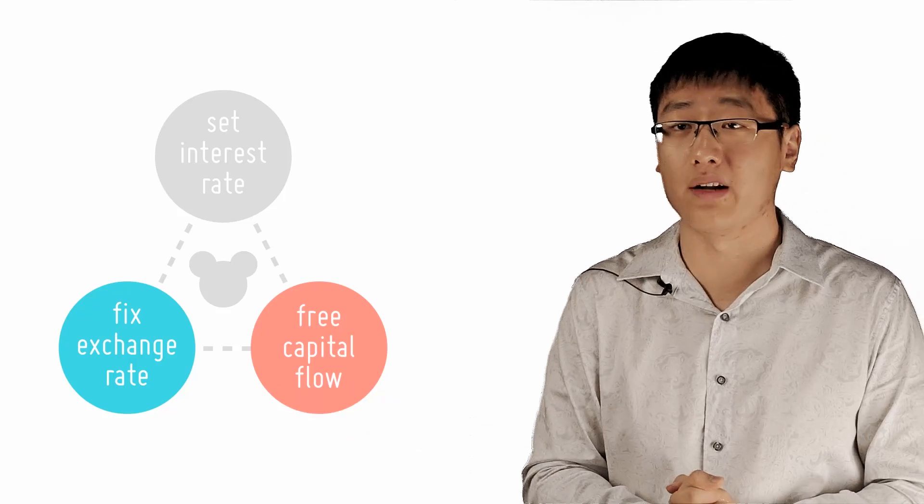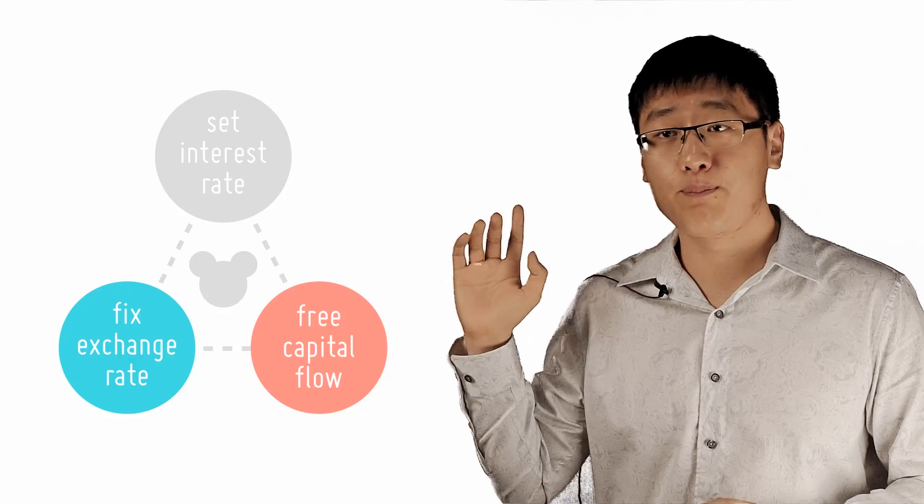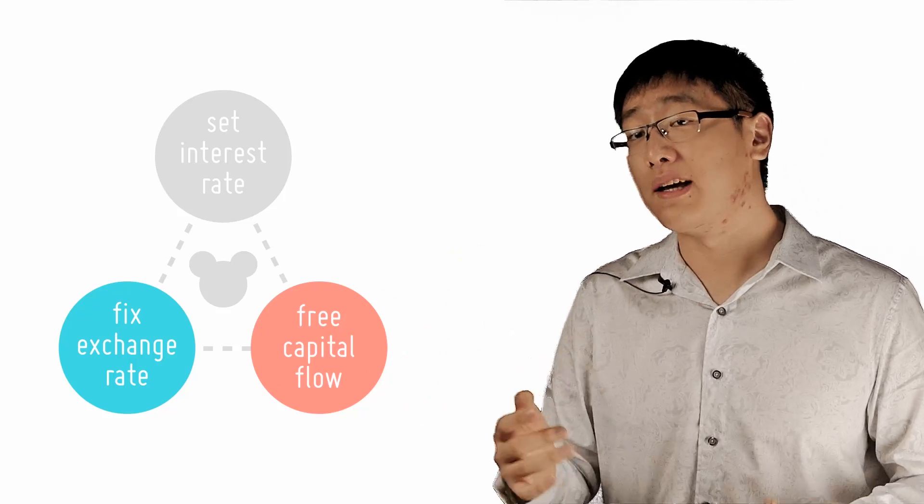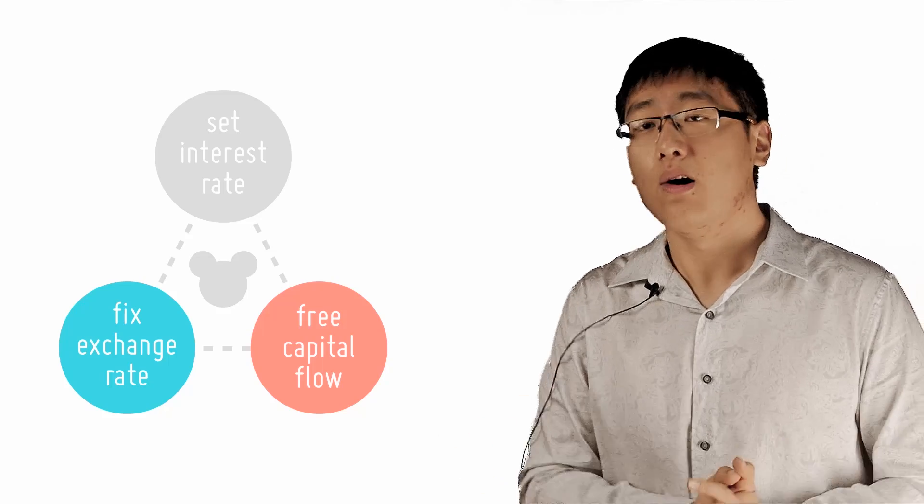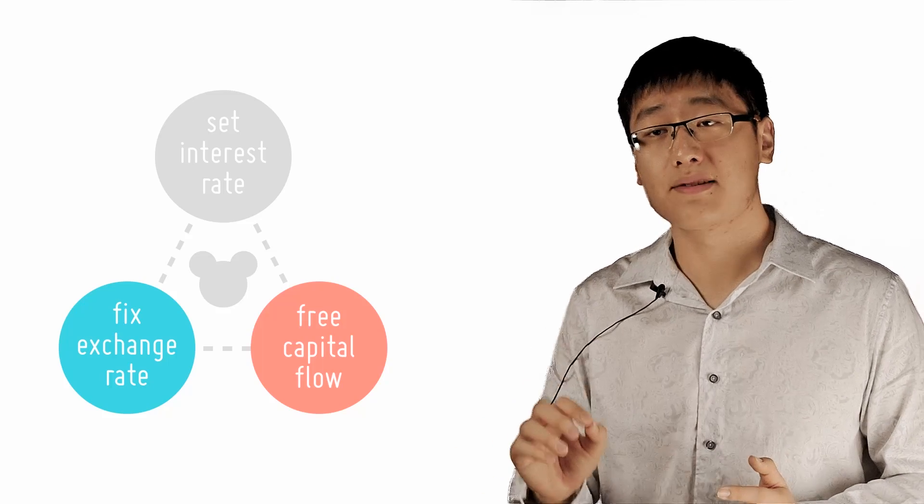Hence, Disneyland is forced to choose two out of the three. This is the impossible trinity working in theory. In practice, people are still trying to find evidence that it exists, although it is rather robust in theory.